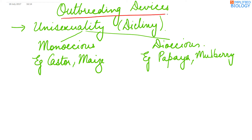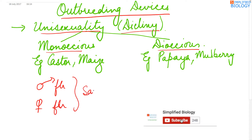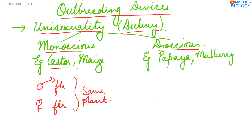Outbreeding devices, or conditions favouring cross-pollination. First is unisexuality, also known as dicliny, which means the male and female flowers are separate. They may be monoecious or dioecious. Monoecious means the male flower and the female flower are present on the same plant. In this case, dicliny can be seen. Examples are castor and maize.